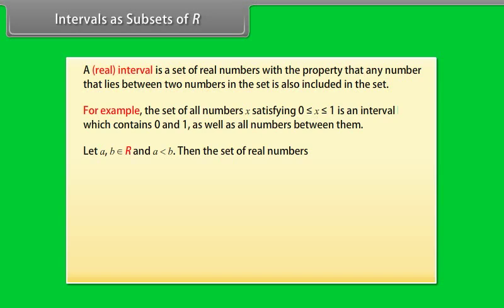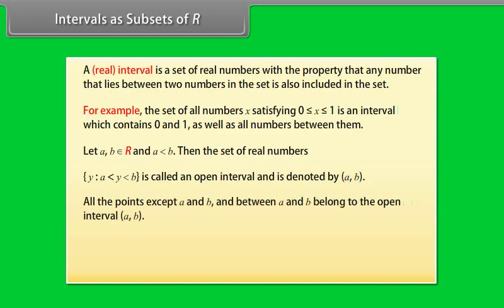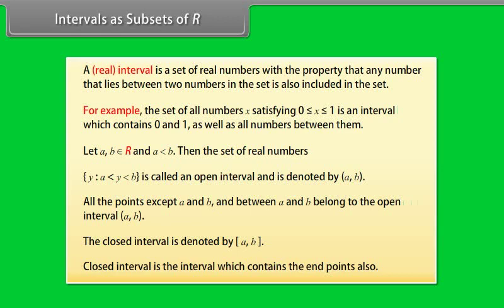Let A, B belong to R and A less than B. Then the set of real numbers y such that A is less than y is less than B is called an open interval and is denoted by A, B. All the points except A and B and between A and B belong to the open interval. The closed interval is denoted by this symbol. Closed interval is the interval which contains the endpoints also.